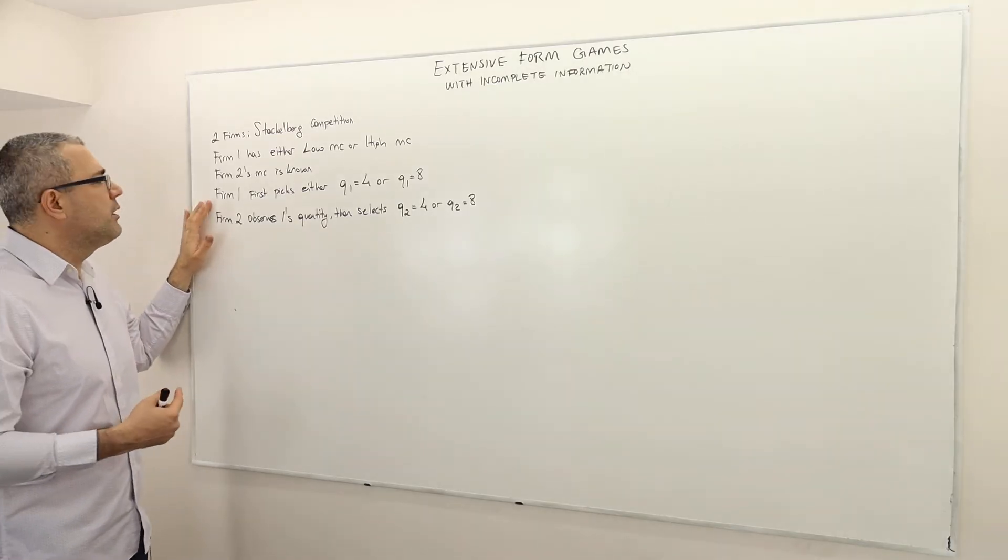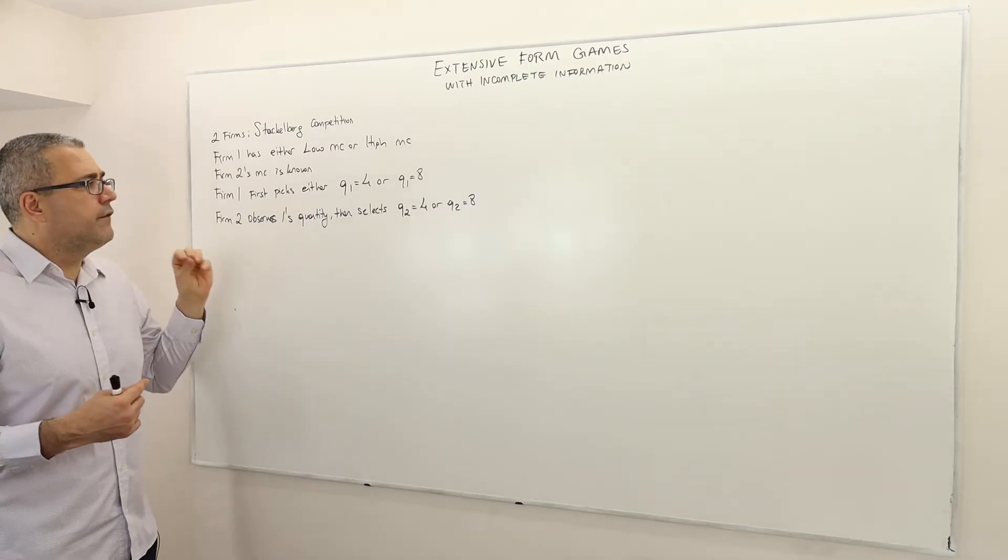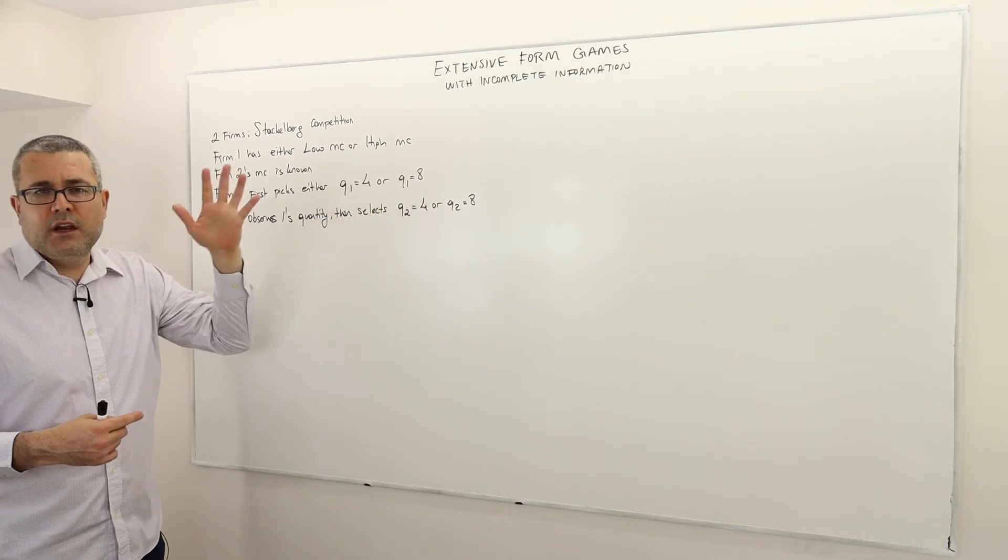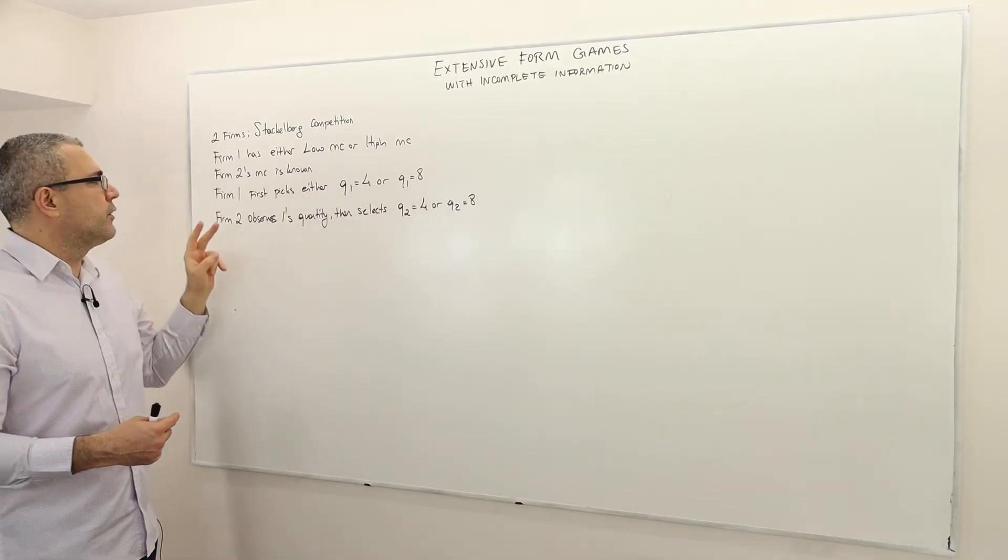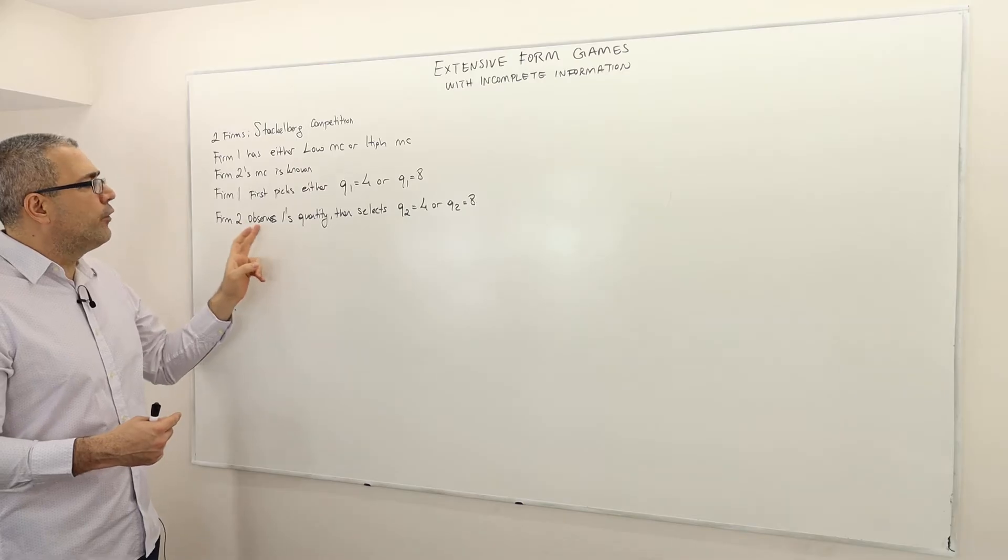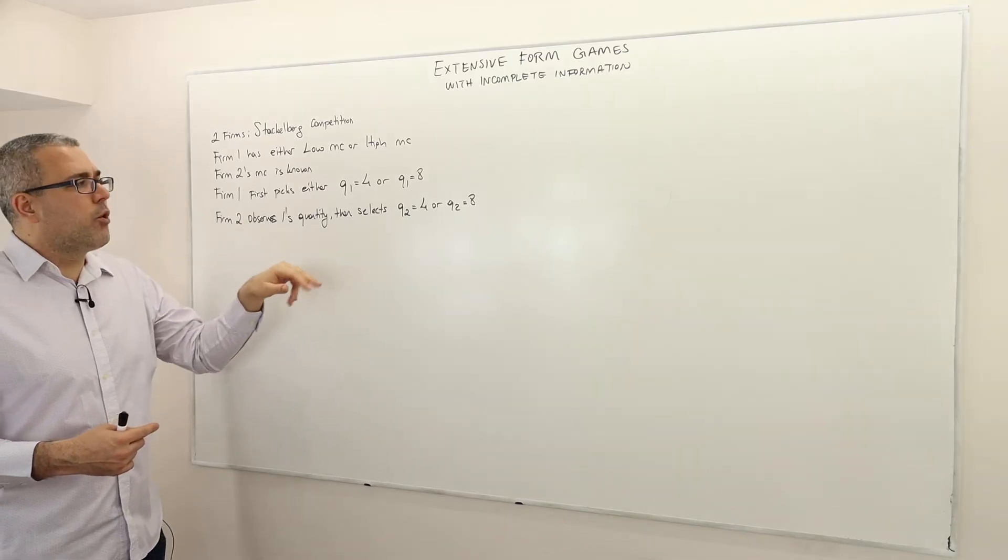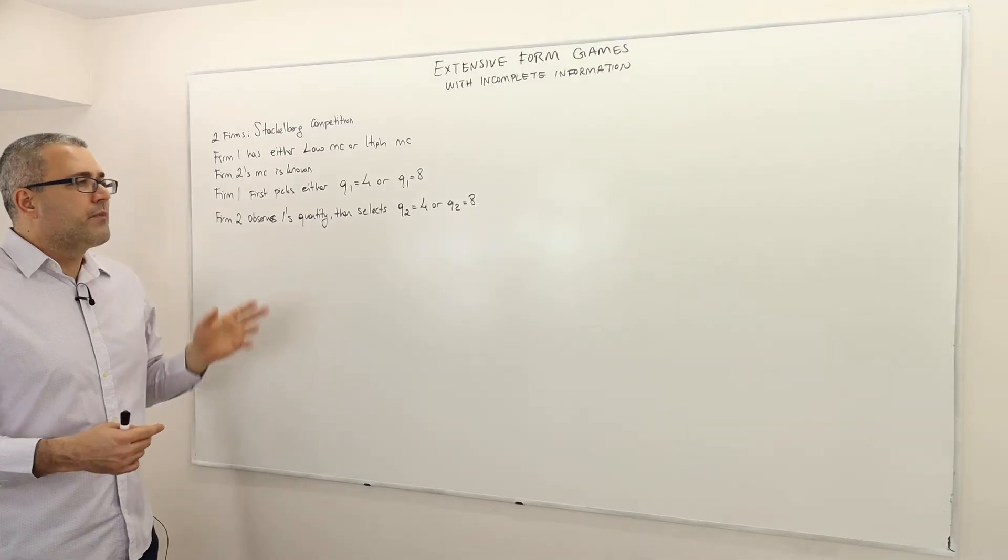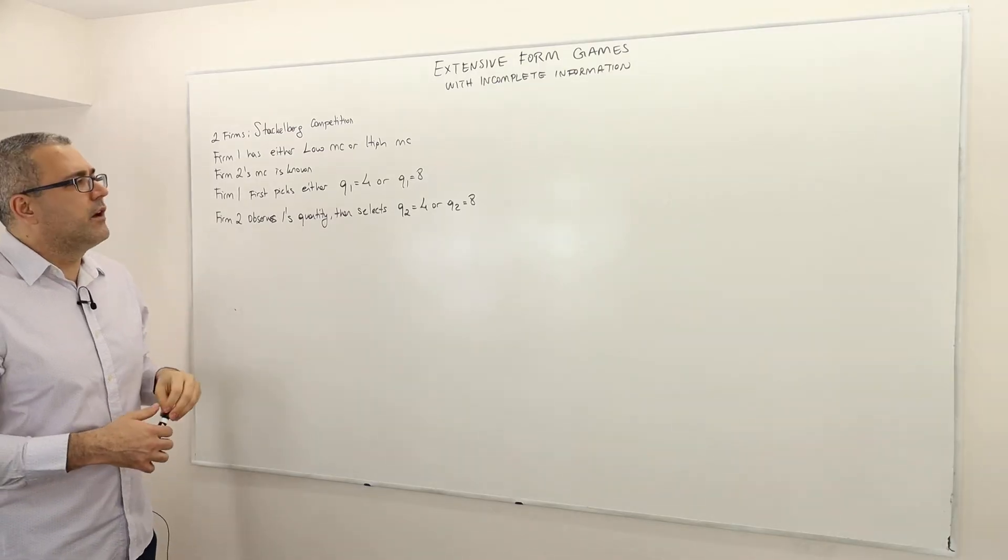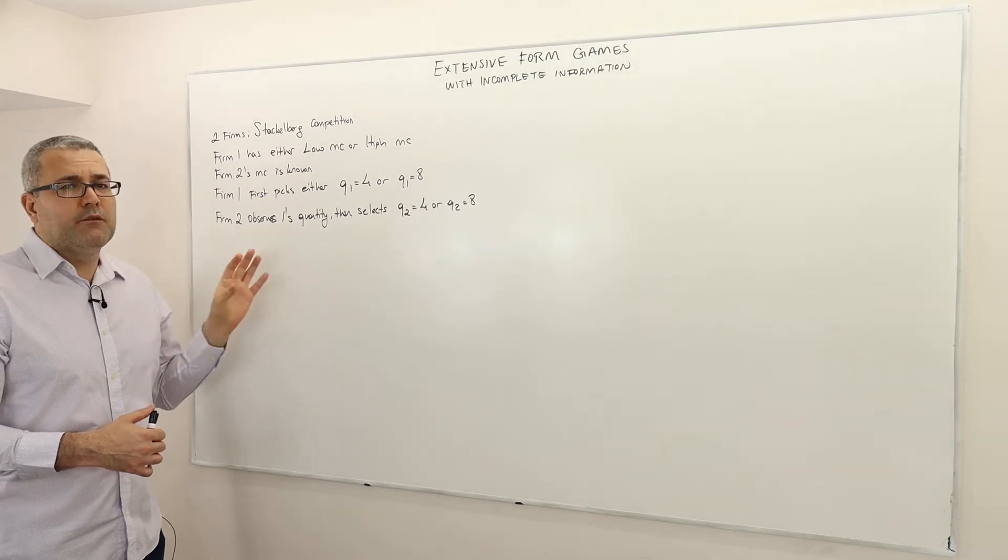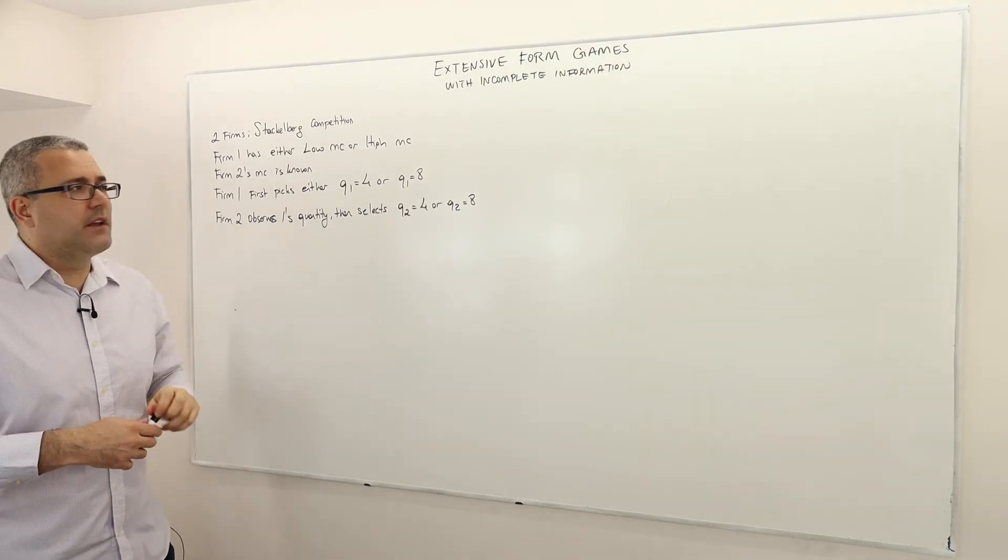So the timing of the game: firm 1 picks its quantity first, its quantity is either 4 or 8. For simplicity there are two levels firm 1 can pick. After observing firm 1's quantity choice, firm 2 selects its own quantity, again either 4 units or 8 units. I'm not going to write down the payoffs but what is the game tree for this game and how do we analyze it?